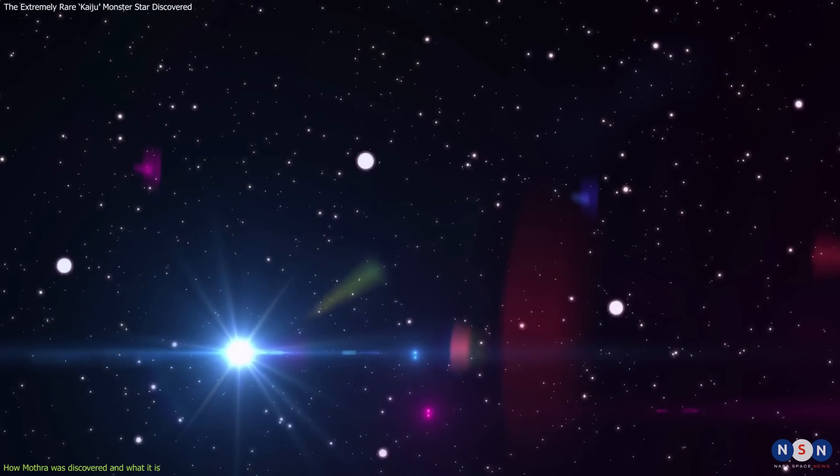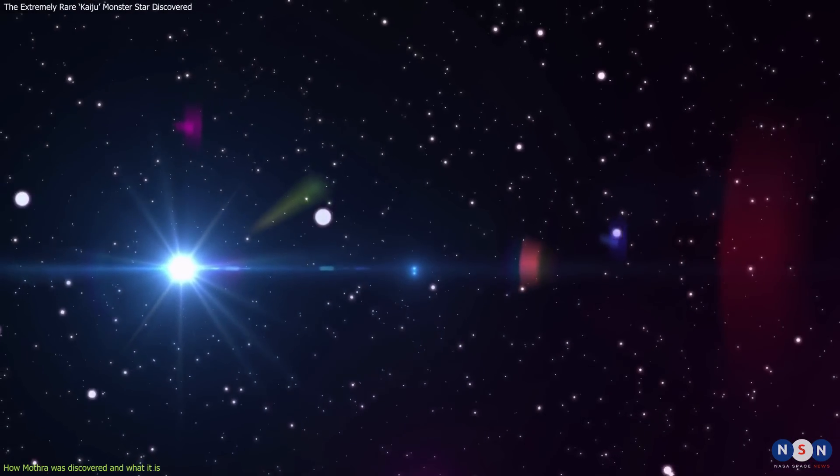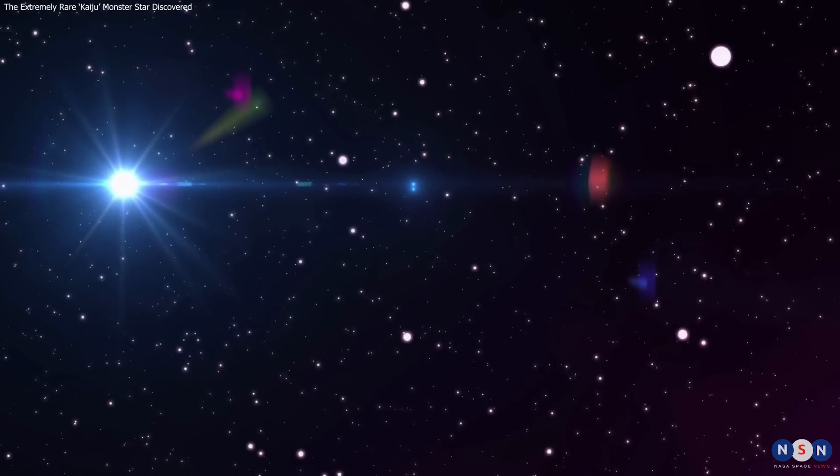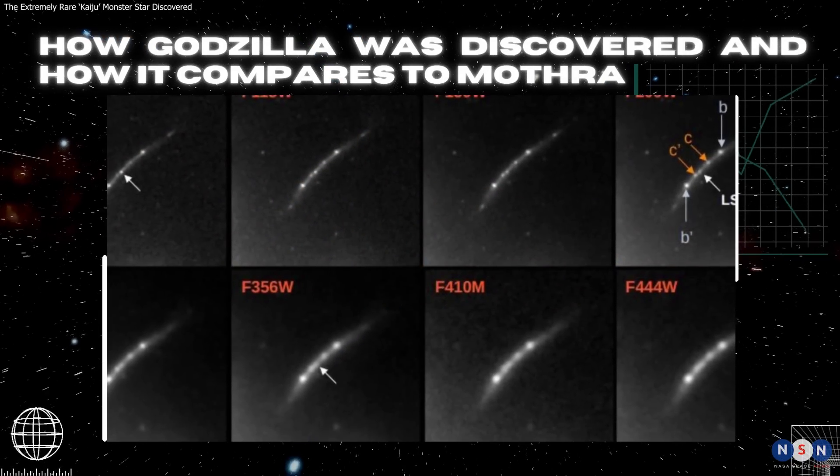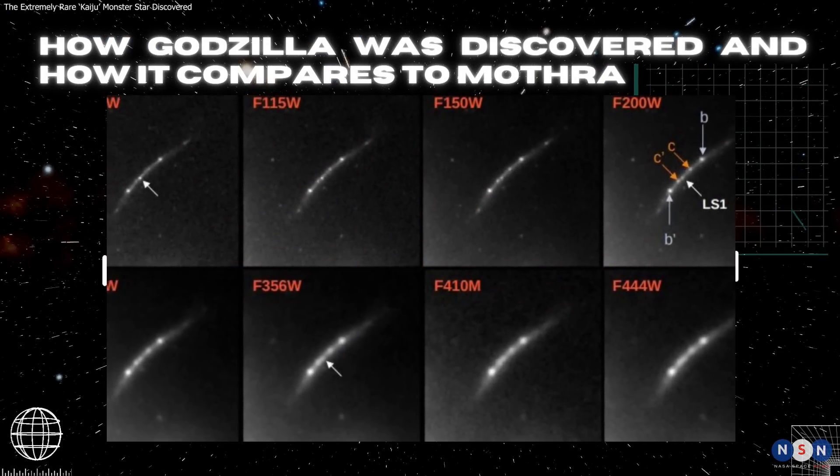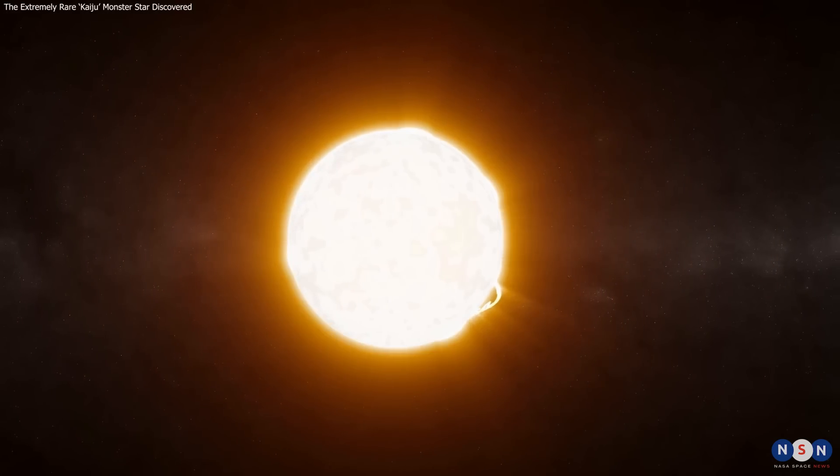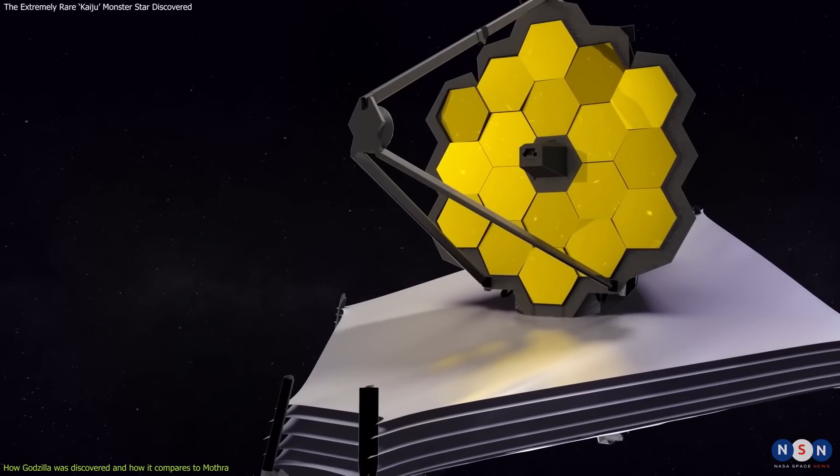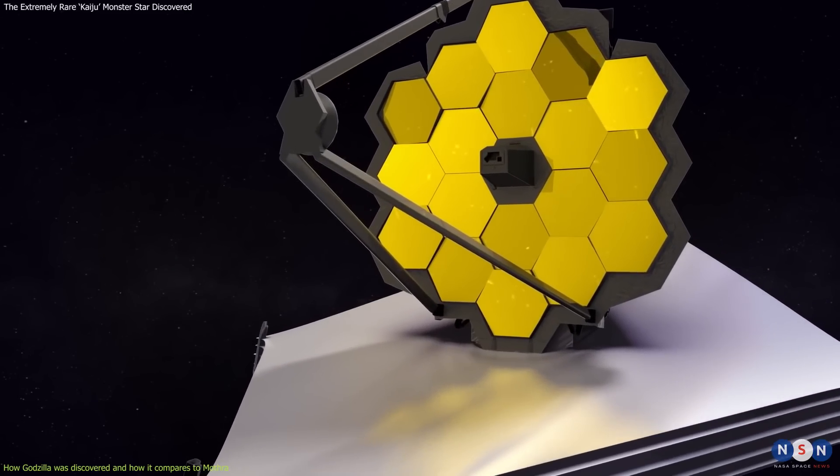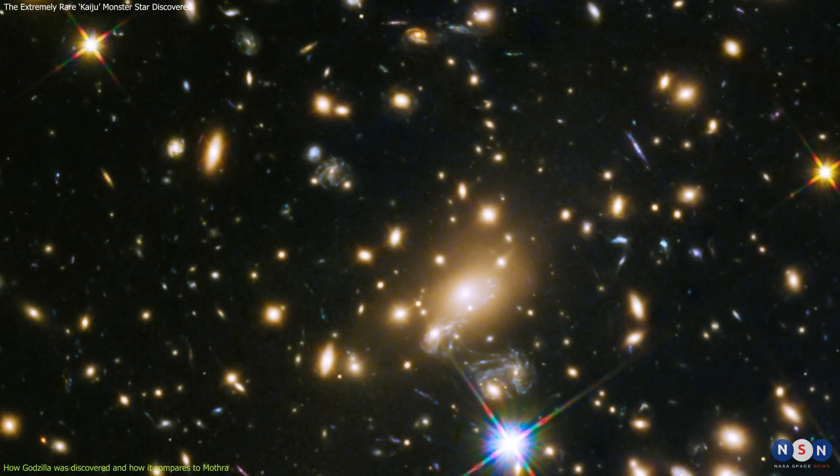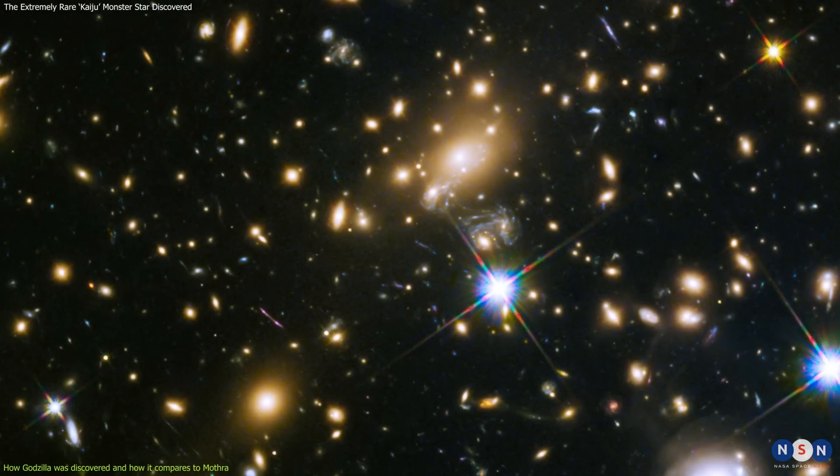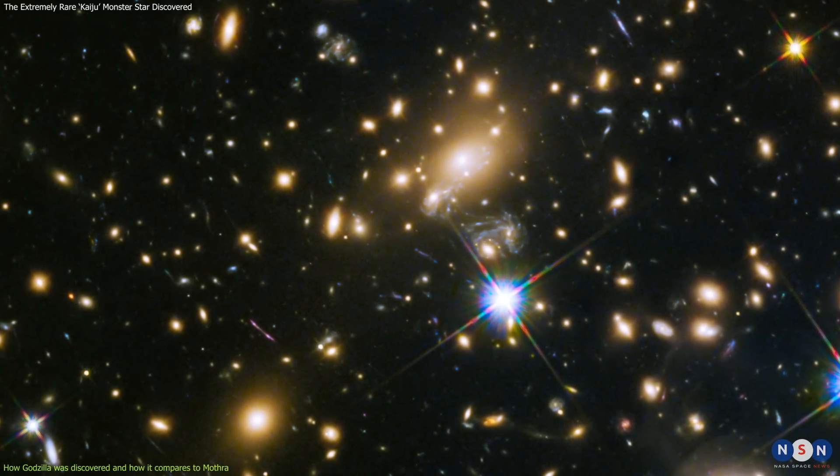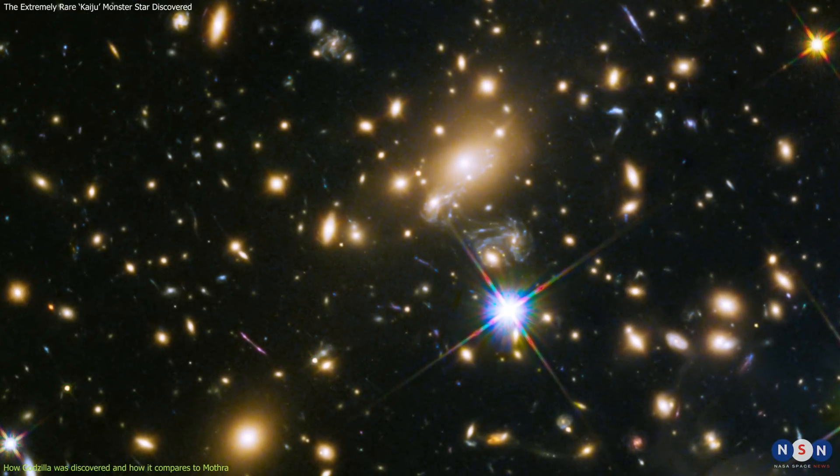But Mothra is not the only kaiju star in the sky. There's another one even more impressive: Godzilla. Godzilla is another star that was discovered by the same team of researchers using the James Webb Space Telescope. It is located in a different region of space that is also magnified by the gravity of another galaxy cluster called MACS J1149+2223.